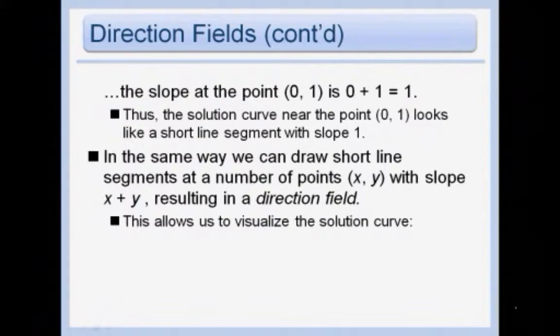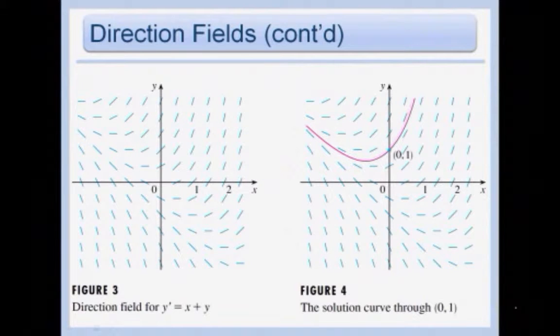The solution curve near the point 0, 1 looks like a short segment with a slope of 1. In the same way we can draw short line segments at a number of points x, y with slope x plus y resulting in a direction field. And this is what allows us to visualize the solution curve. So what do I mean by that? Well we knew that it should go through this point, and we said that the slope there was 1, and to draw a slope of 1, you just draw a 45 degree line. So that's an easy one.